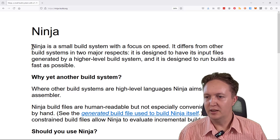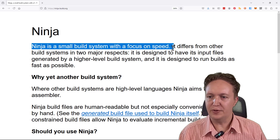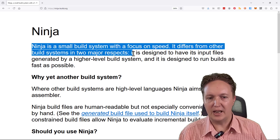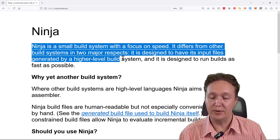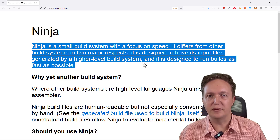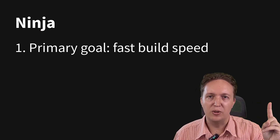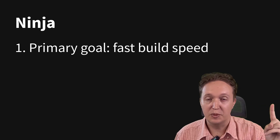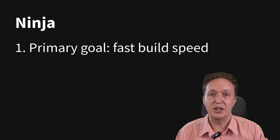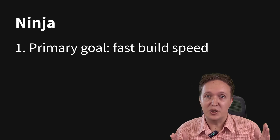Straight off the Ninja website: Ninja is a small build system with a focus on speed. It differs from other build systems in two major respects. It is designed to have its input files generated by a higher level build system, and it is designed to run builds as fast as possible. The primary goal is speed, especially with incremental builds. This is very useful when you have incredibly large projects like say a web browser — Google Chrome, for example — where speed matters. You've got hundreds of thousands of files.